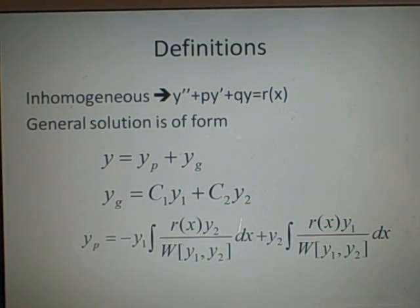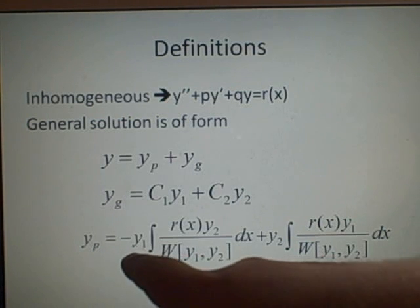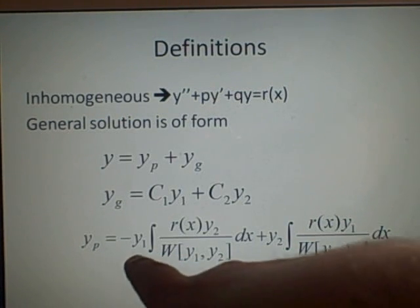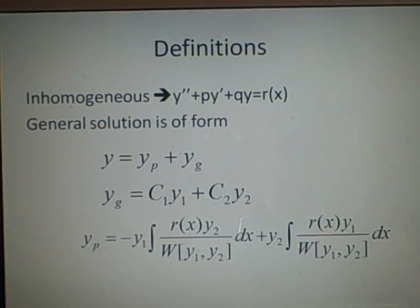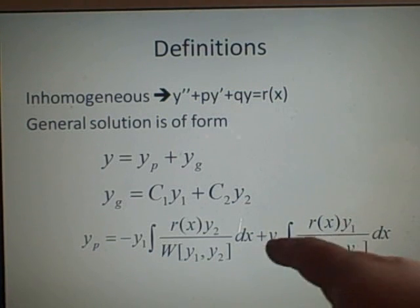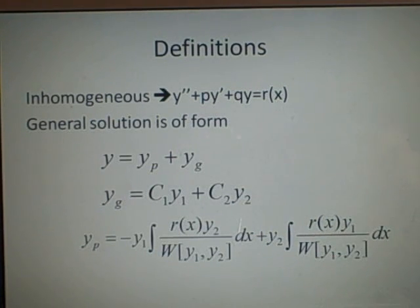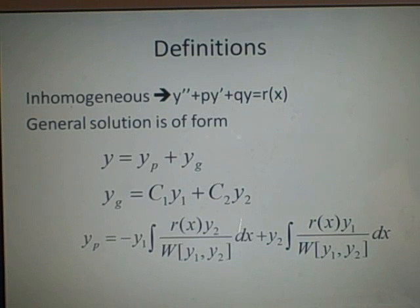To find yp, you use this formula: minus y1 times the integral of r(x)·y2 over the Wronskian of y1, y2 dx, plus y2 times the integral of r(x)·y1 over the Wronskian of y1, y2 dx. You can search how to derive that somewhere.